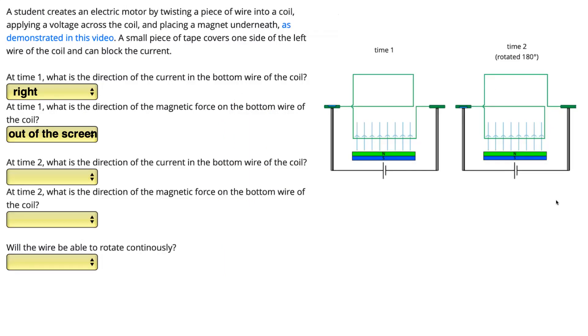Looking at time two, we're trying to find the direction of the current and the direction of the magnetic force. At time two, the current is flowing out of the long side, which is the positive side of the battery, up through the wire.